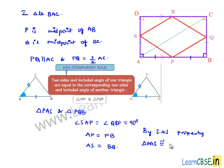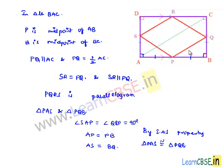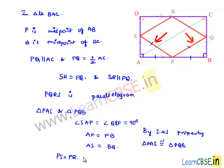Triangle PAS is congruent to triangle PQB. When two triangles are congruent, corresponding sides and angles are equal, therefore PS is equal to PQ. Now in parallelogram PQRS, adjacent sides are equal. Since a parallelogram with equal adjacent sides is a rhombus, we can say PQRS is a rhombus.